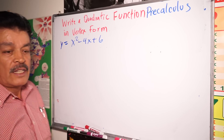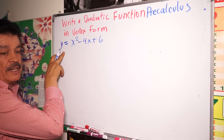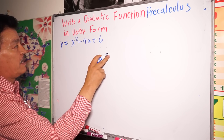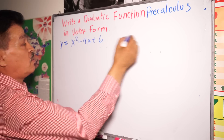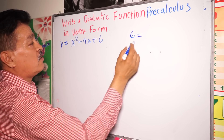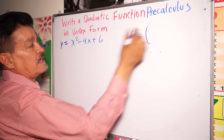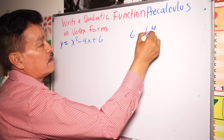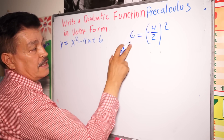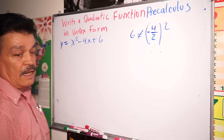Check: what is (b divided by 2) to the second power? The coefficient b is minus 4, so (minus 4 divided by 2) squared equals 4. But c is 6, not 4, so it's different — it's not a perfect square. So we have to complete the square.